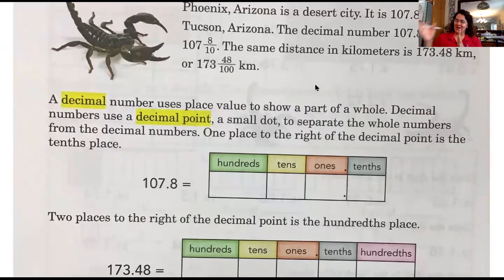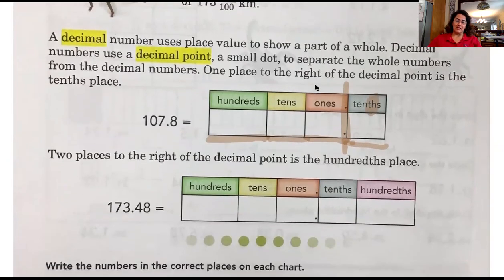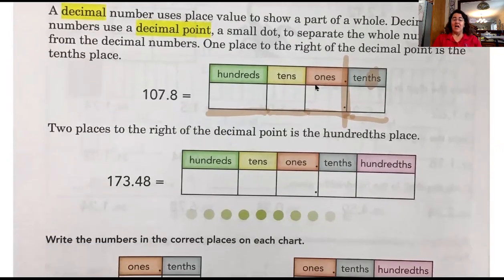One place to the right of the decimal point is the tenths place. Here are the place values we are familiar with — ones, tens, hundreds. Then, look friends, they put in the decimal point, and if you go to the right of the decimal point you're dealing with tenths. Notice the 'th' — that tells us we're on the right side of the decimal point. Two places to the right of the decimal point is the hundredths place. Remember, looking for the 'th' tells us we're on the right side of the decimal point.